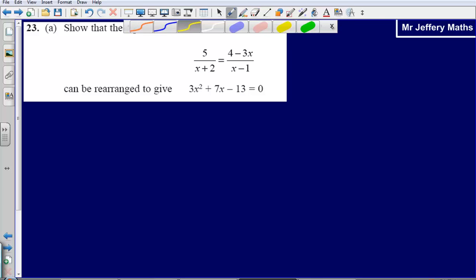This is question 23 from the 2008 calculator paper. Here we are asked to rearrange this equation to give 3x squared plus 7x minus 13.